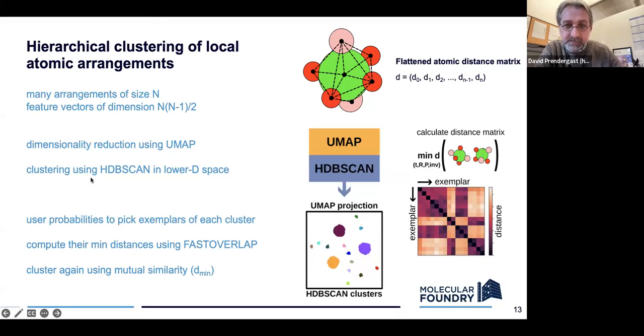OK, so that can work. Now, what does it tell us? Well, so that was a cheap operation that we could do on all the data that we have. The next thing is that we use those probabilities that HDB scan provides us for each of these clusters to pick what we call exemplars or best examples from each cluster. Those that have a high probability and just a small number of them. And then we can use the more expensive method, this fast overlap method to calculate the minimum distances between those objects. And now we can cluster those guys again depending on their mutual similarity. So whether they are similar or not by this more accurate fast overlap technique that now takes into account permutations.